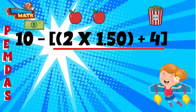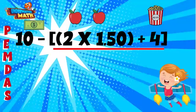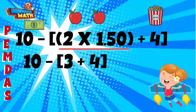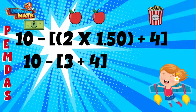First is parentheses. This problem has an outer set of parentheses called brackets and inner parentheses. Once you enter a set of brackets or parentheses, the order of operations starts over. Within our brackets we have parentheses, so we start there. Two times 1.50 is three. We can write our next line replacing two times 1.50 with a three inside our brackets.